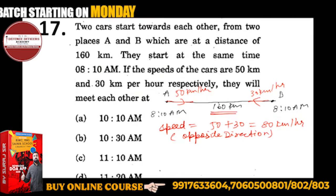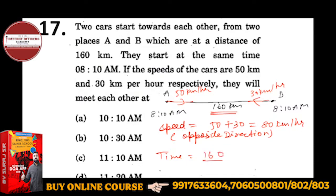Distance is 160 km, speed is 80 km per hour. Time is equal to distance upon speed. Distance is 160, speed is 80, so 2 hours.